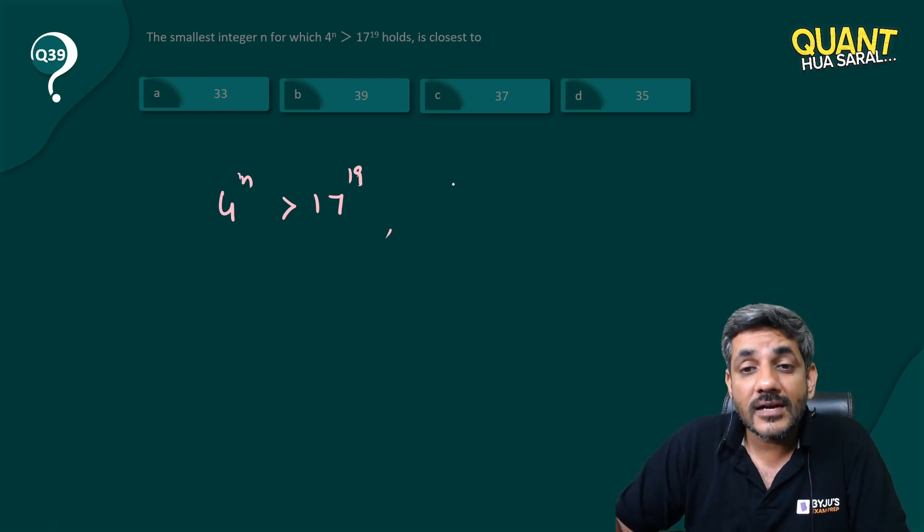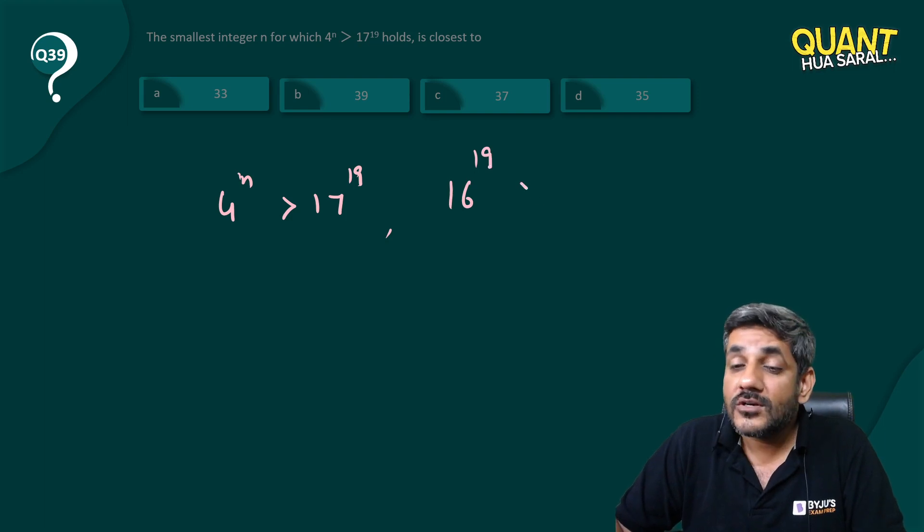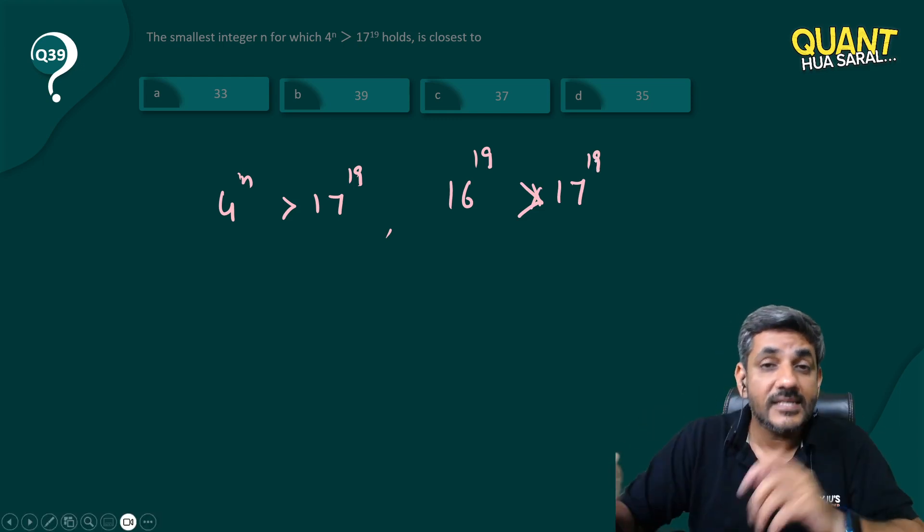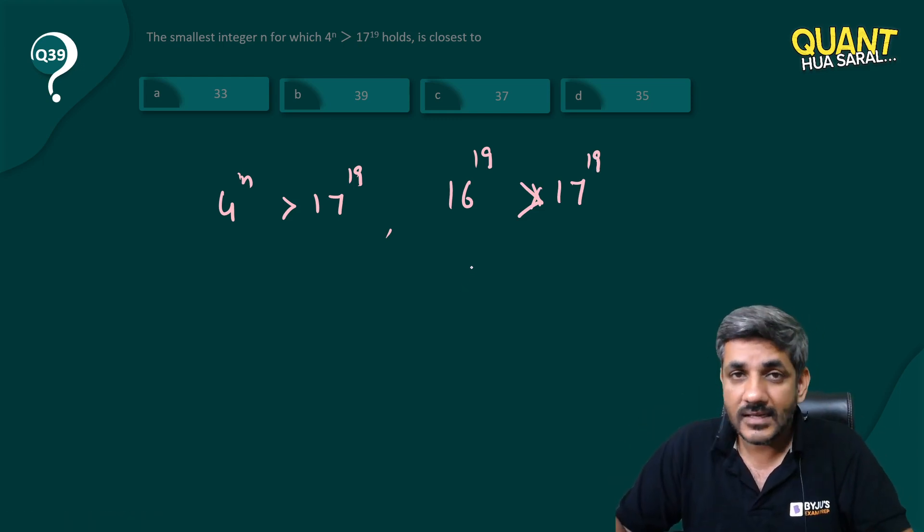So can I say had it been 16^19, it would not have been greater than 17^19? I mean 16^19 < 17^19. I hope you agree with that.